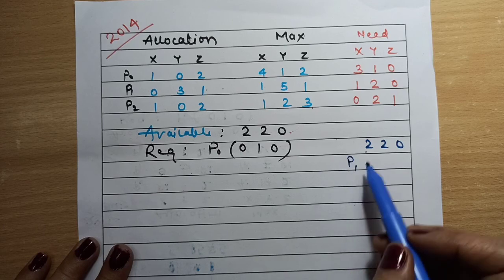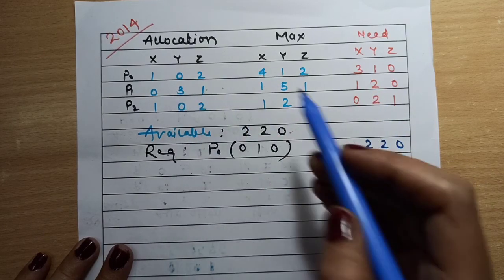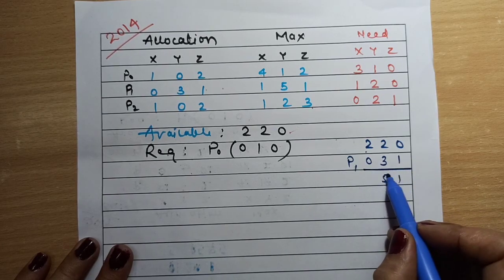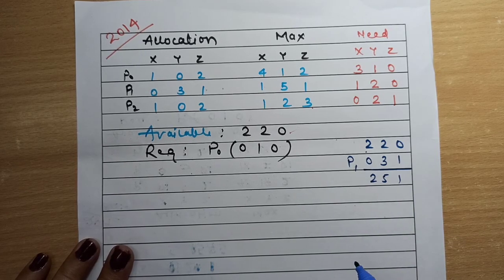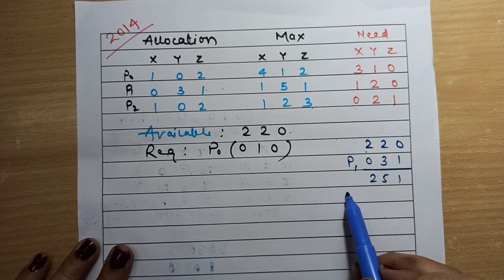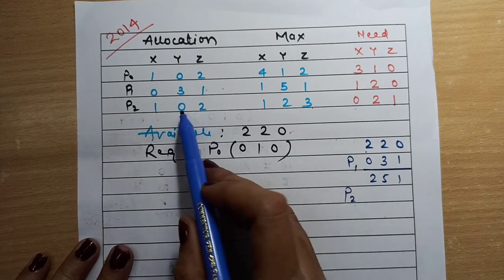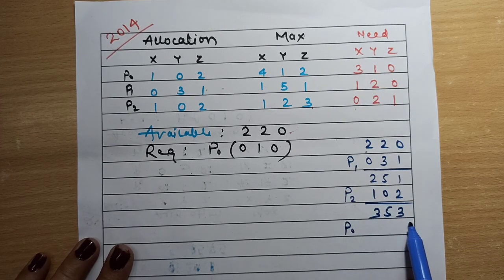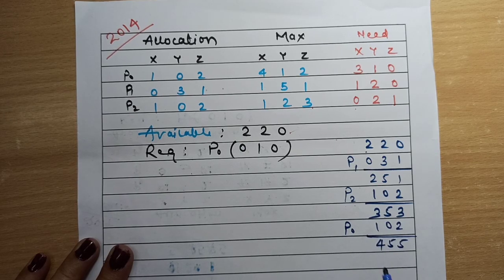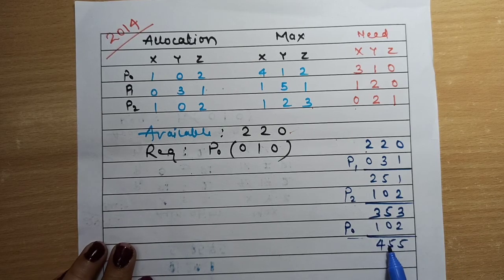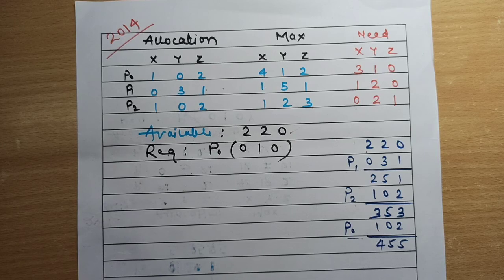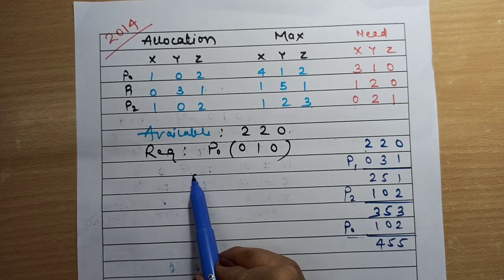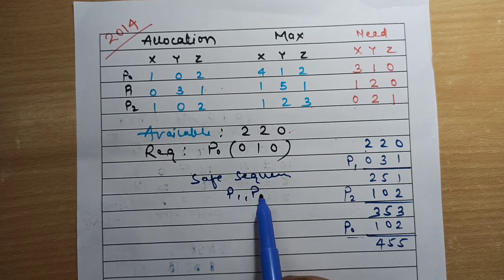We can't fulfill P0, so let's check P1. P1 can execute; it returns its allocation of 0 3 1, so available becomes 2 5 1. Now P2 can execute with need 0 2 0 — we have enough resources. P2 returns 1 0 2, so available becomes 5 5 4. Then P0 executes with need 3 1 0 and returns allocation 1 0 2, giving us 5 5 5 total. We have found the safe sequence: P1, P2, P0.